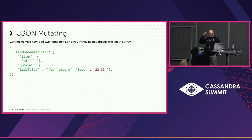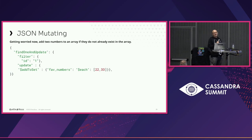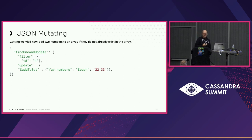Even more complex: find the document, go to fav_numbers which is an array, and add 22 and 33 to it if they don't exist — that's what $addToSet does. So we've got a level of complexity in update operations, and we've got a bunch of read-modify-write operations going on — things we don't like to do in Cassandra.